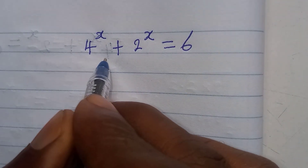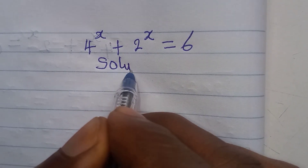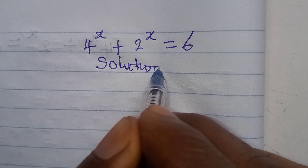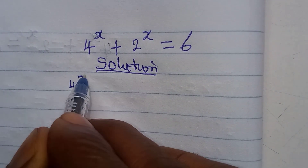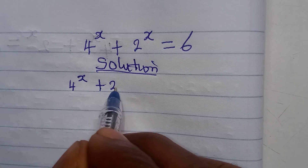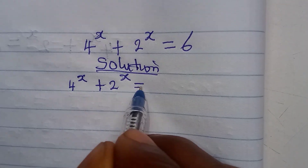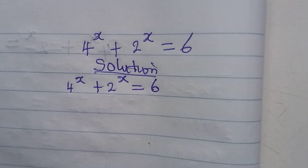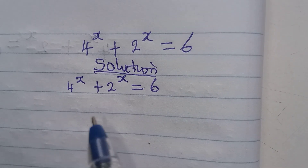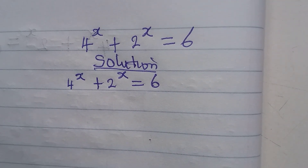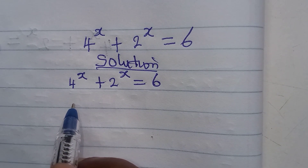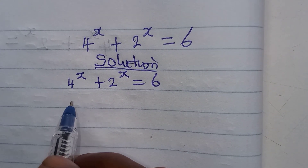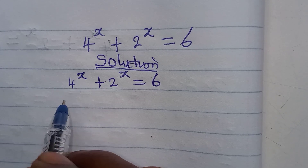Hello everyone, let's solve this problem very quickly. We have 4 to the power of x plus 2 to the power of x equals 6. Now you may try to guess the answer, but how do you solve it? Let's go. We notice that 4 and 2 are related.